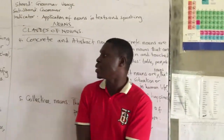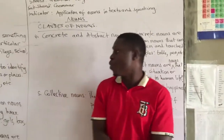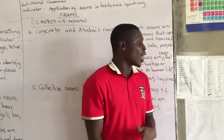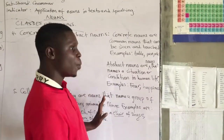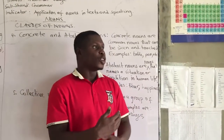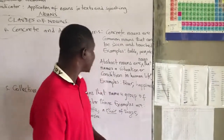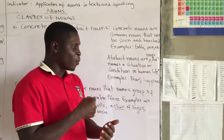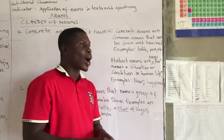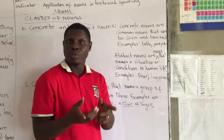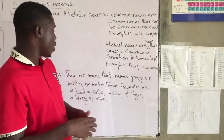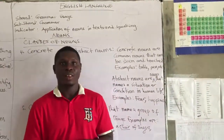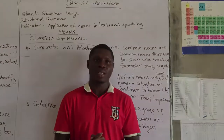Just as in our previous lessons we were identifying common nouns, proper nouns, and count and non-count nouns in a paragraph, I'm going to give you another paragraph where you should identify these new nouns — concrete, abstract, and collective. Take it seriously, identify them well, and learn how the writer used them so that you can also apply them correctly. That is it for today — we end our lesson here and I'll see you in the next lesson.